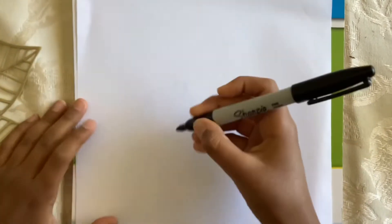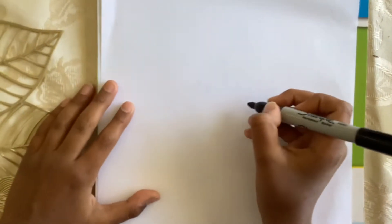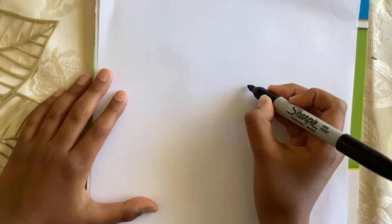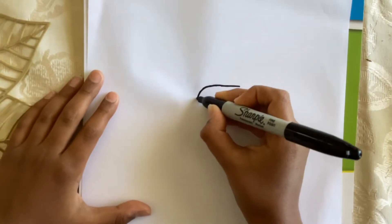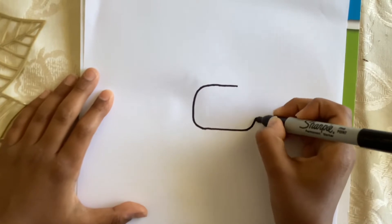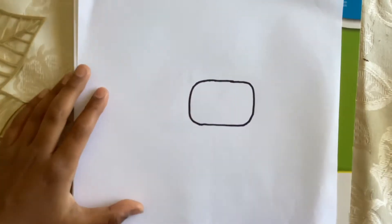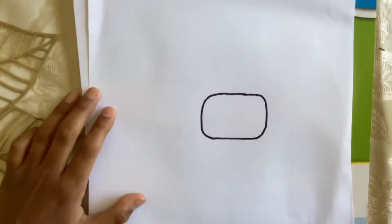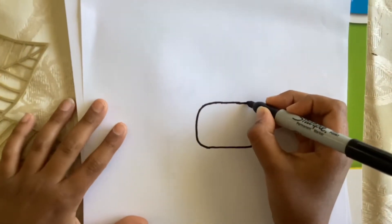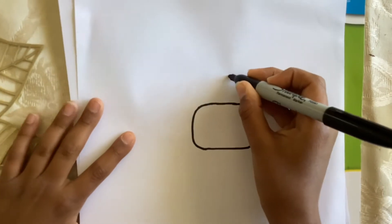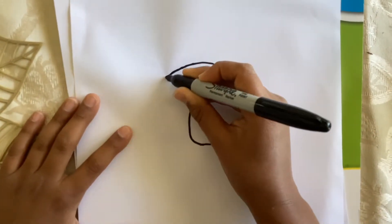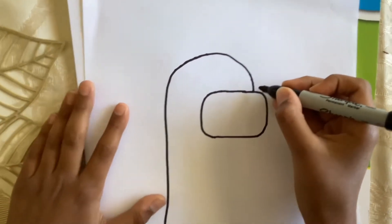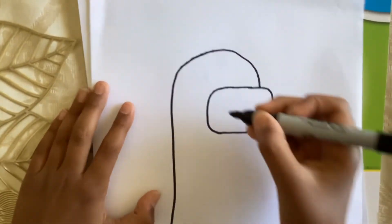First, we draw this oval shape, but it's kind of like a rectangle with rounded corners like that. Next, we're going to draw this big curve that goes around, starting at the rounded rectangle.